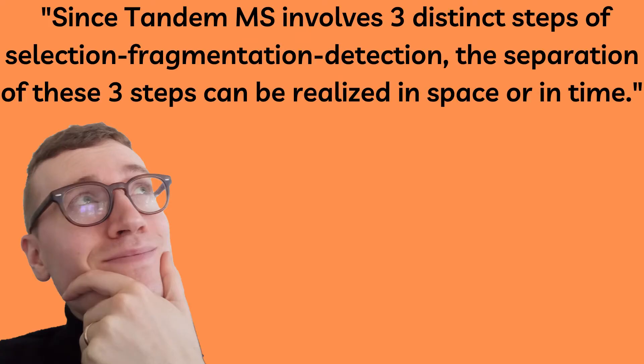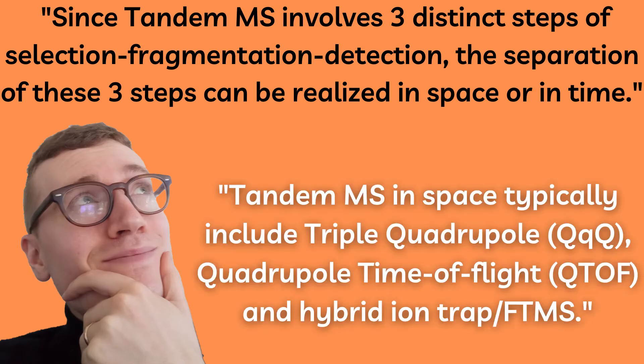Let us take a closer look at how this process can be carried out. Since tandem MS involves three distinct steps — selection, fragmentation, and detection — the separation of these three steps can be realized in either space or in time. Tandem mass spectrometry in space typically includes triple quadrupole, quadrupole time of flight, and hybrid ion trap FTMS.